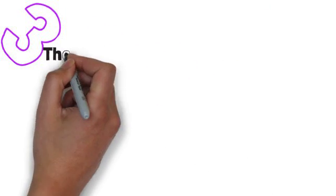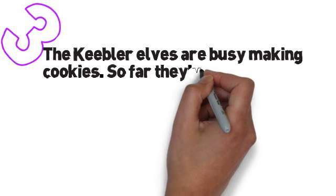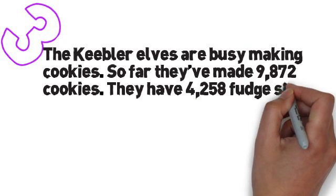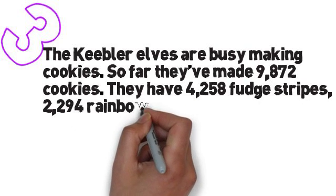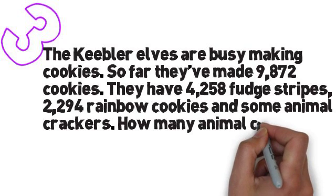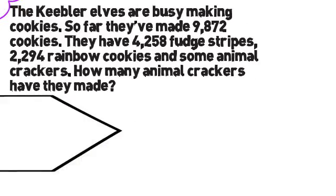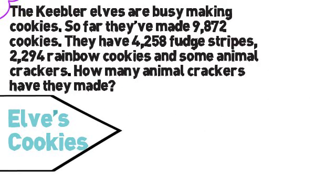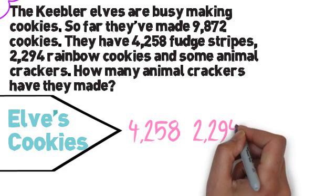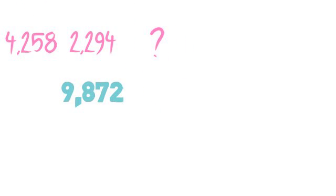The third problem is slightly harder. This one talks about three parts — two of them are known and one is unknown — and the total has been given. The elves are busy making cookies. So far they've made 9,872 cookies. They have 4,258 fudge stripes, 2,294 rainbow cookies, and some animal crackers. How many animal crackers have they made? The numbers 4,258 and 2,294 are part of the total — there are only some of each type of cookie. Also, some animal crackers is a part of the total as well. The total is 9,872.